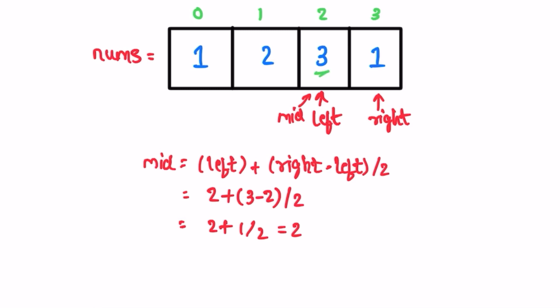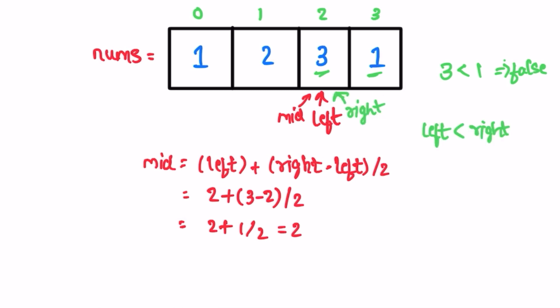With mid pointing at index 2, we check if the element at mid is less than the element at mid + 1. Since 3 > 1, the condition fails. When it fails, we move right to mid, reducing the search space to the left. Now left equals right, so we exit the loop and return the left pointer index, which is 2.